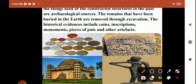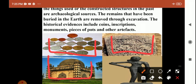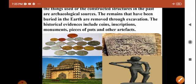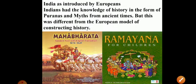Historical evidence includes coins, inscriptions — meaning writing or designs on stone — and monuments, which are ancient structures. Pieces, parts, and other art and craft belonging to the Harappan civilization are all examples of archaeological sources.